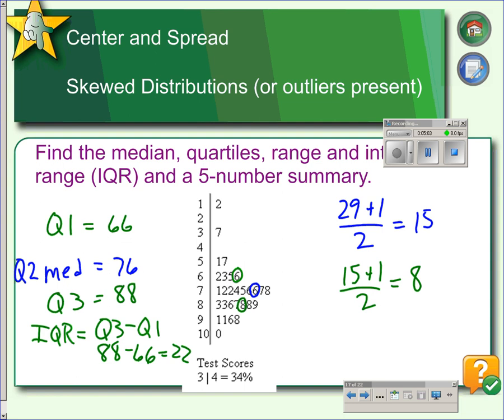If we were to find a five-number summary, we would just add to the Q1, median, and Q3 a minimum value, which is 12, and a maximum value, which is 100. That would be a five-number summary. We'll come back to that at a later time.